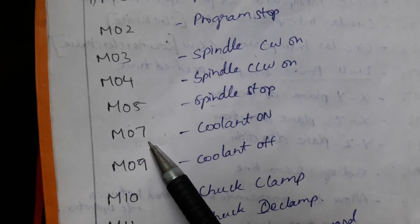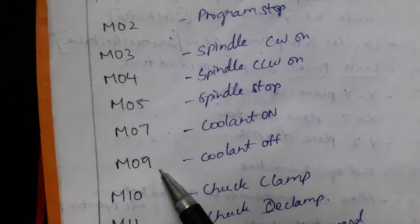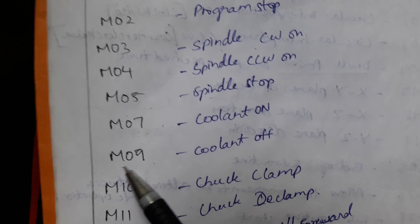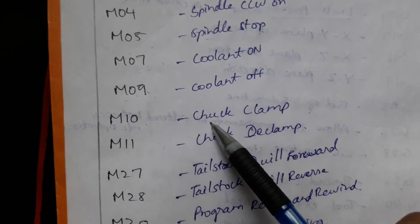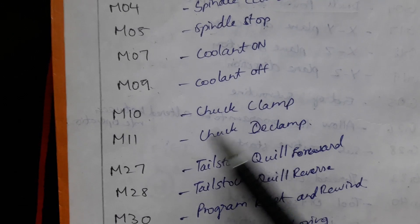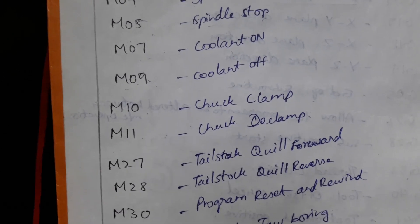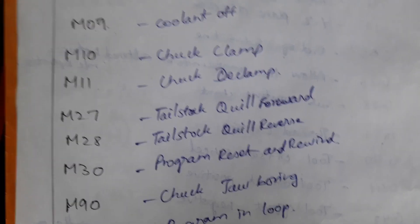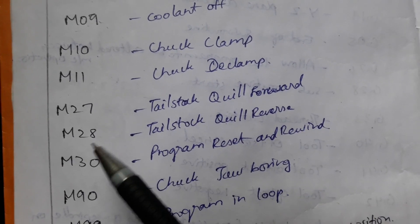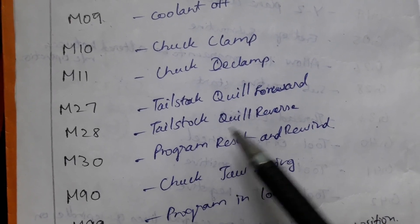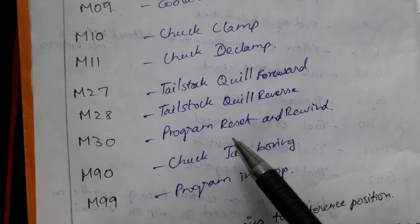M07, if the operator needs the coolant to reduce the heat, he may use M07. If he does not want this, to stop the coolant, M09. M10, chuck clamp. M11, chuck declamp. M27, tailstock quill forward. M28, tailstock quill reverse. M30, program reset and rewind. M90, chuck job boring. M99, program in loop.